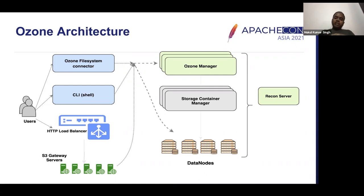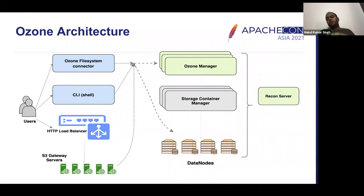Now, coming to the access points on how we can access Ozone: we have the Ozone file system connector at the top, which is one method of talking to Ozone. We also have the CLI shell, which is just like the Hadoop command line and can be used to talk to the Ozone Manager or Storage Container Manager. At the bottom is our REST endpoint — the S3 gateway server — which is how users can talk to Ozone via HTTP protocol.